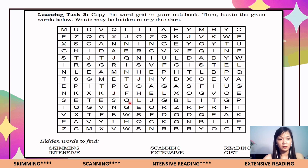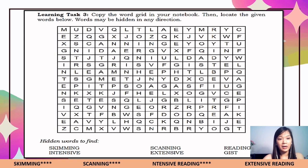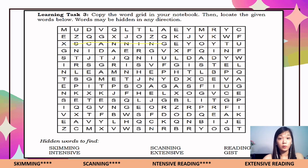The words may be hidden in any direction — vertical, diagonal, horizontal, or any direction. You can put a line on the words once you find them, for example if you find 'scanning,' draw a line or circle around it, as long as you are able to find all the hidden words.